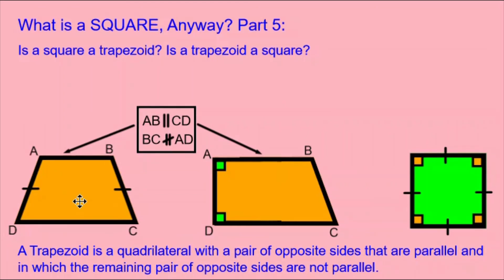Both trapezoids ABCD shown are trapezoids. But is the square a trapezoid? The answer is no. The square definitely has a pair of opposite sides that are parallel — in fact, it has two pairs. And that's the problem, because one of the pairs of opposite sides needs to not be parallel for it to be a trapezoid. So the square is not a trapezoid.